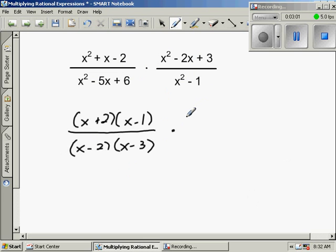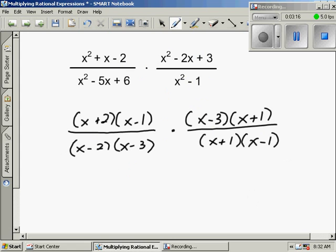The numerator of the second fraction factors to x minus 3, x plus 1. And then x squared minus 1 is x plus 1, x minus 1. Now, as long as the entire expression matches, you can mark it off. So x minus 1, x minus 1, x plus 1, x plus 1, x minus 3, x minus 3. So we're left with a final answer of x plus 2 over x minus 2.